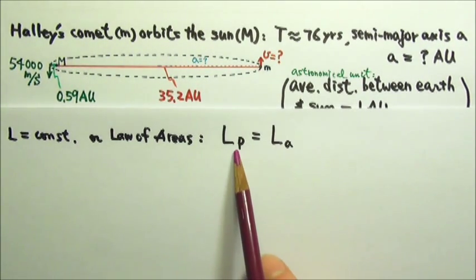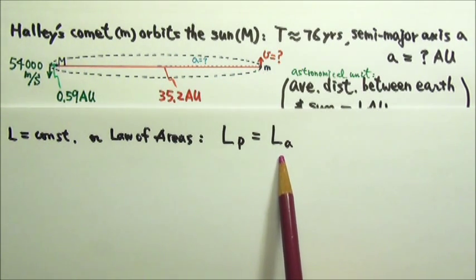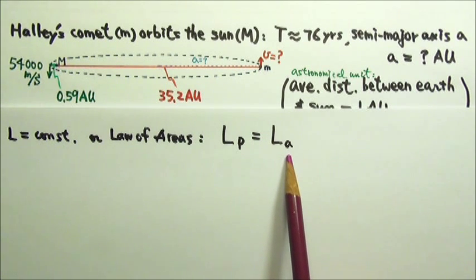So the angular momentum at the closest point, the perihelion, equals to the angular momentum at the farthest point, the aphelion.